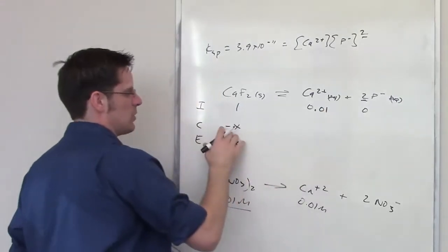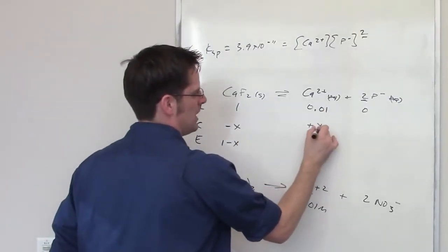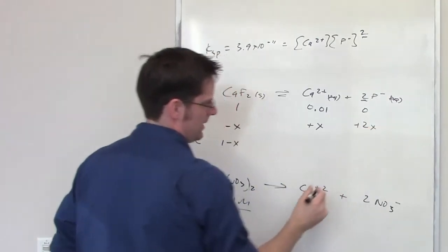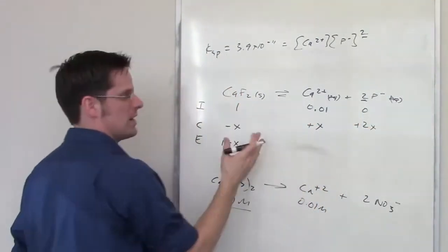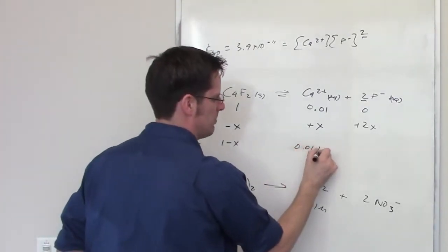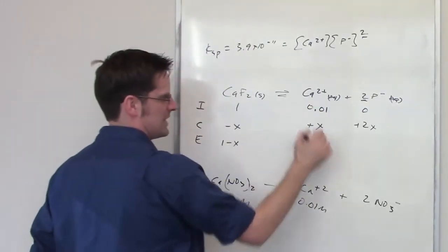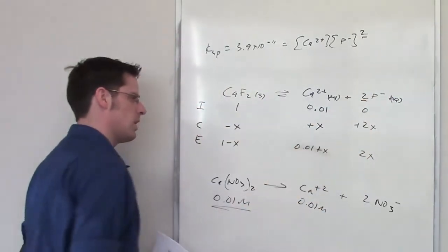Over here, however, it's going to increase by an amount of plus x and plus 2x, because there are two molar equivalents of fluoride to calcium fluoride. I add rows one and two, I get 0.01 plus x as my equilibrium concentration of calcium. I get 2x as my equilibrium concentration of fluoride.